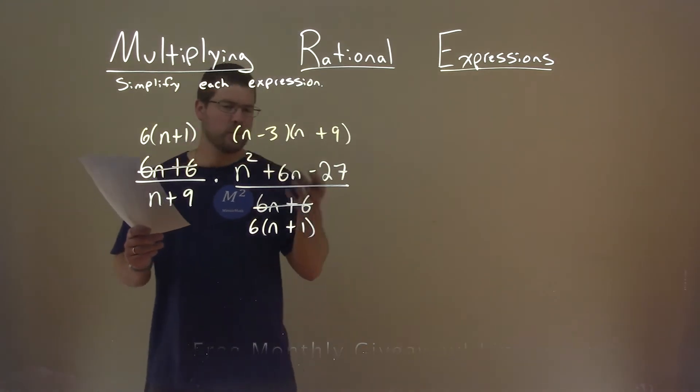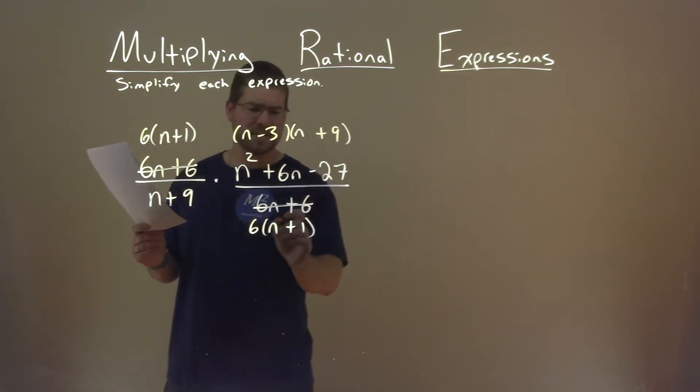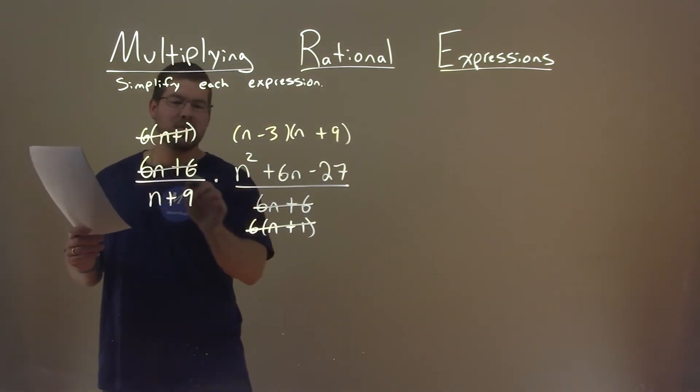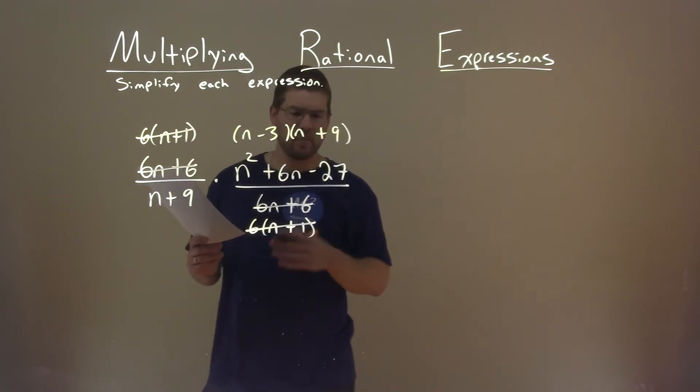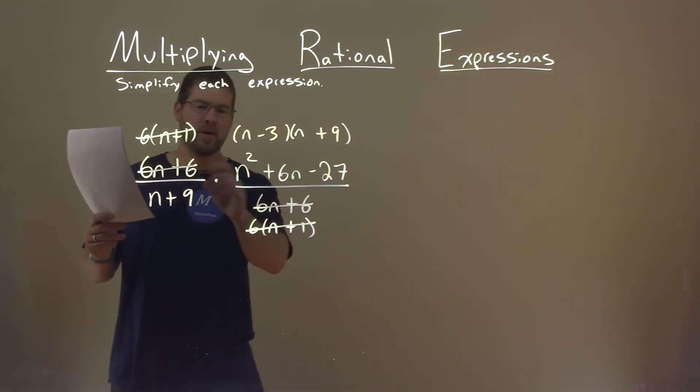Alright, so now it's factored completely. Let's cross off what we can. Like I said, 6 times n plus 1 is the same thing really written twice here. So we could have actually just crossed it off in the beginning, and I probably should have. But now you can see that, pay attention, you might be able to cross things out early.